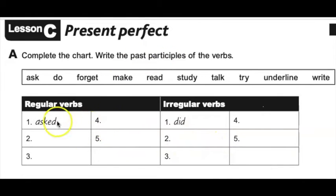What I suggest you do is just number your paper one to six and write regular verbs at the top and then write irregular verbs and one to six. Let's go through and see if you can identify which verbs are which.